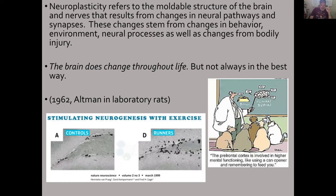The brain does change throughout life. If you picked up a textbook from 25 years ago, it would tell you that the brain is fixed by somewhere around 10 to 13 years of age. I have an MRI on my computer of an 88-year-old female showing neurogenesis in the brain. But it can also change in not always the best way. Here is a paper from 1962 that was redone in 1999, showing a cross-section of the insular cortex, where they had control rats and then put rats on a running wheel. Those black dots are neurogenesis — growing neurons. The fact that this is a very real phenomenon is simply no longer disputed.